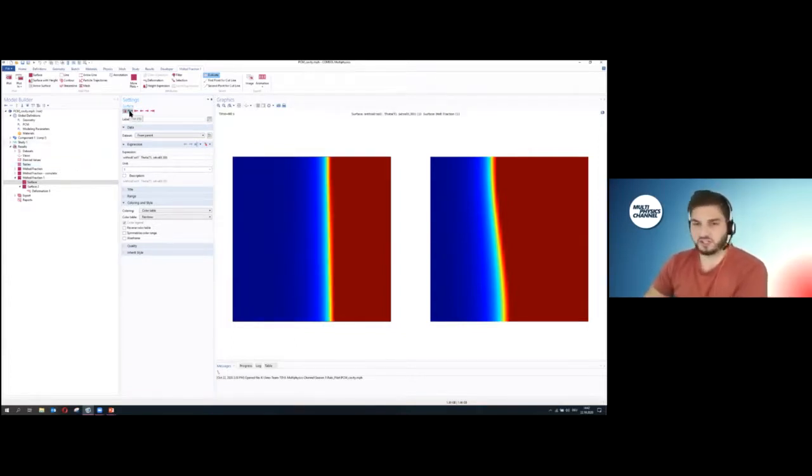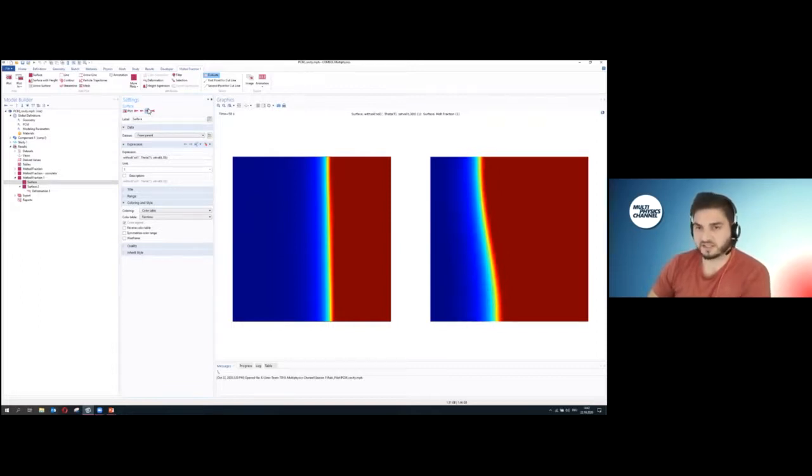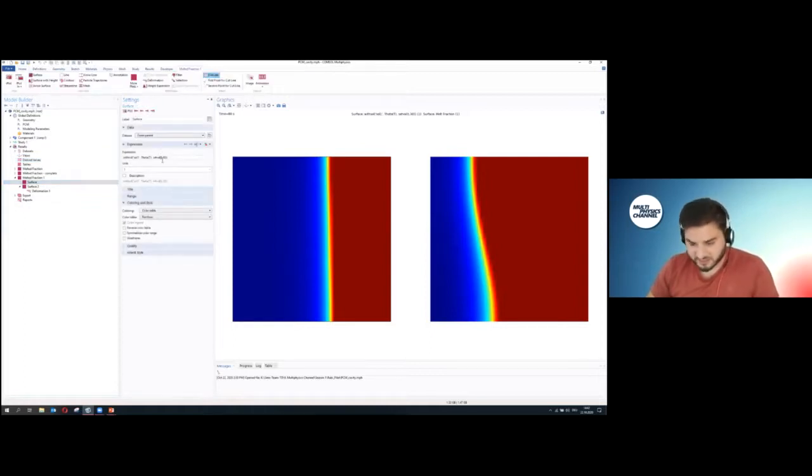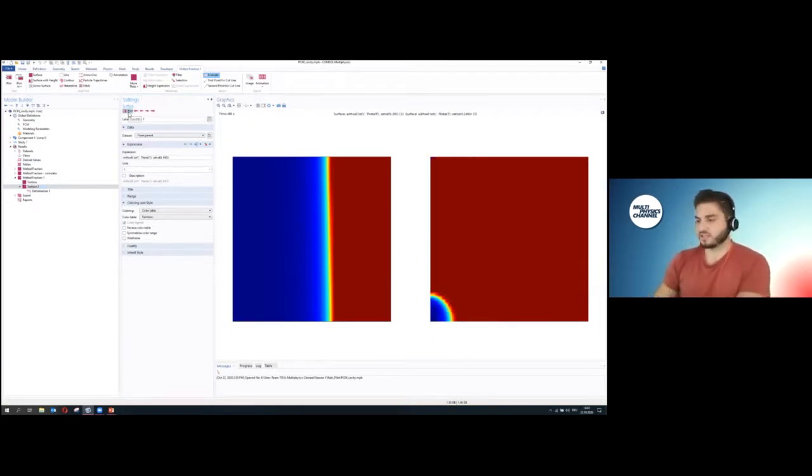Now you see it's already changing the left picture. When I keep clicking through my results, the left picture remains fixed at one time step and the right side changes. I want to change the right side as well. Here I say I want to plot it at 140 seconds, almost towards the end when the whole domain is almost fully molten. Now I can continue clicking through my solution but nothing happens. The withsol operator has overridden all the other settings of this plot group.